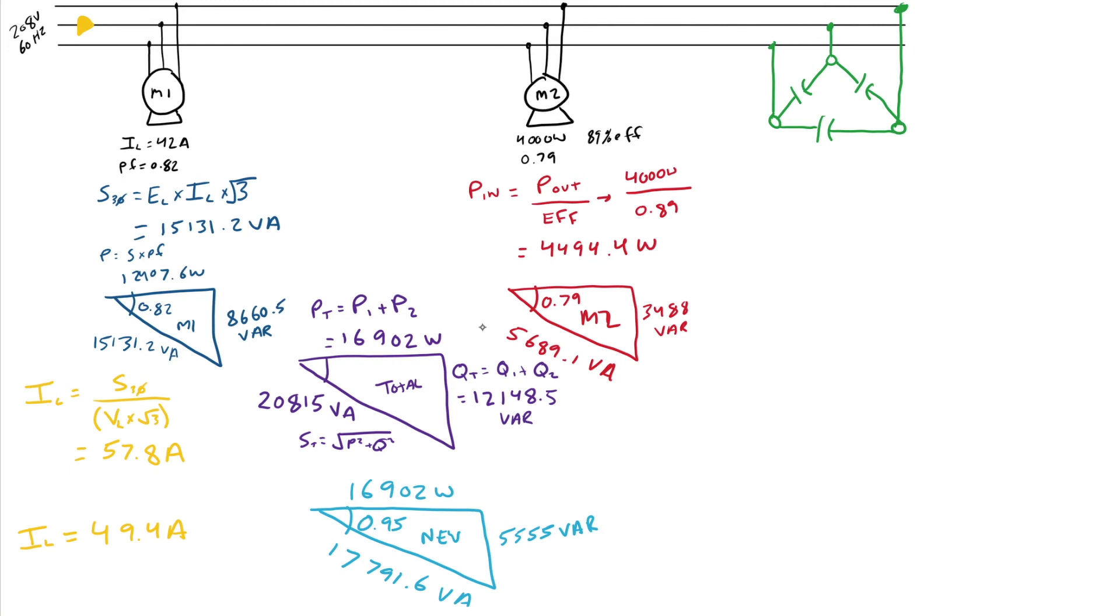Now what I want to do with that information is I want to size my cap bank size. So I take my original VARs, 12,148.5 VARs. And I subtract my new VARs, 5,555 VARs. What I get, the difference between them is the size that my capacitor bank needs to be. So in this case, I get a size of 6,593 VARs.